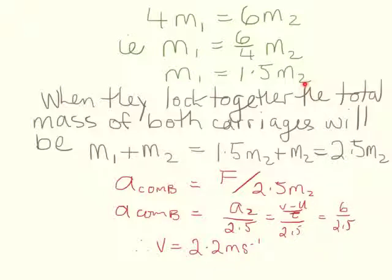So when they lock together, we've essentially got a total mass of 2.5M2. The acceleration of the combination is the force applied divided by the mass it's acting over. And we also know that the force on mass 2 is equivalent to acceleration 2. Acceleration 2 is V minus U over T. That came to 6.